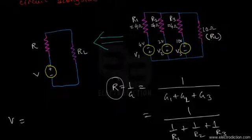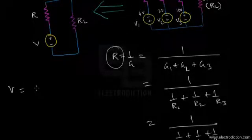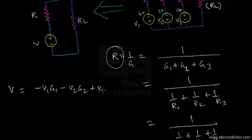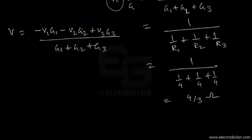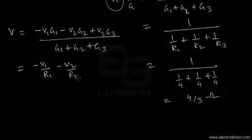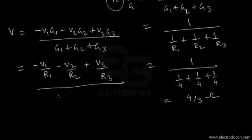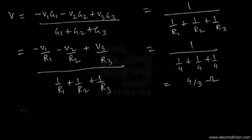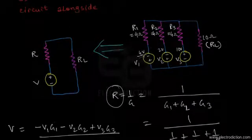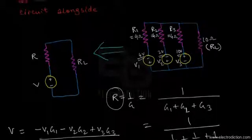With that convention, the Millman's voltage formula is: V = (−V1·G1 − V2·G2 + V3·G3) / (G1 + G2 + G3), which in terms of resistances becomes (−V1/R1 − V2/R2 + V3/R3) / (1/R1 + 1/R2 + 1/R3). The values are V1 = 4 V, V2 = 2 V, V3 = 10 V, with R1 = R2 = R3 = 4 Ω.